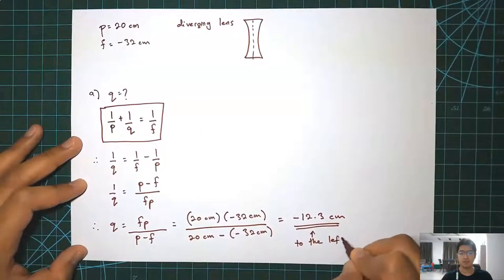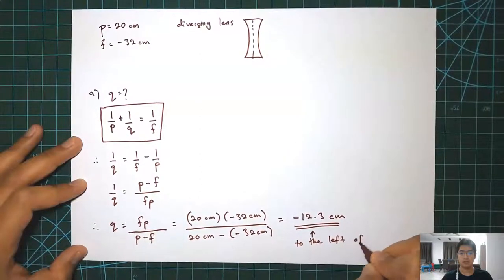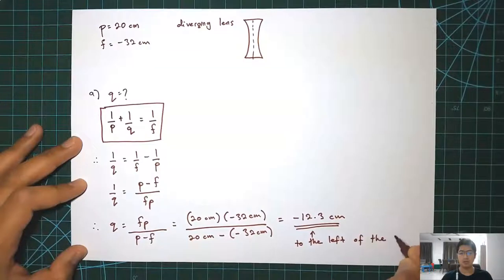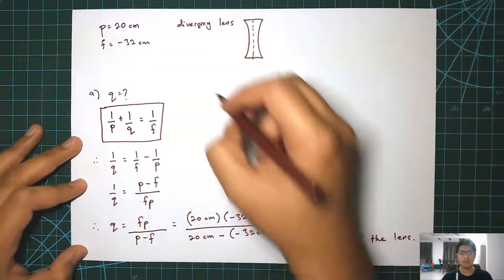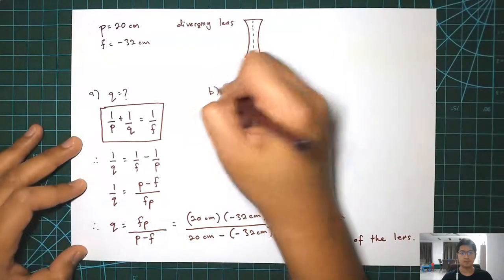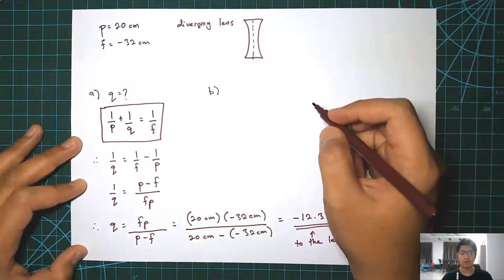This is the image distance. And then because the sign is negative, so the image will be formed to the left of the lens. And then the image will be virtual.